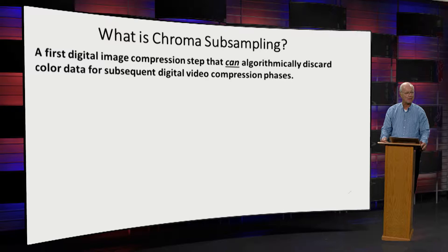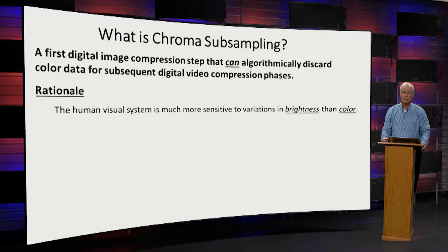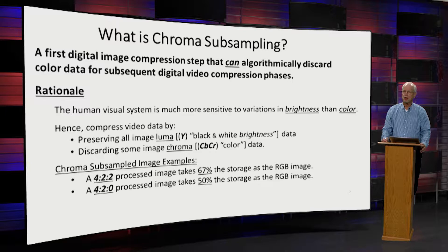Chroma subsampling is a first digital compression step. What it does is algorithmically throw away some of the color information in a color image, feeding the remaining information into subsequent digital compression techniques, which we're not covering today. The rationale is that the human vision system is much more sensitive to levels of lightness and darkness versus color differentiation. The color is known as chroma — CB, CR — and the brightness will be referred to as luma in this presentation.